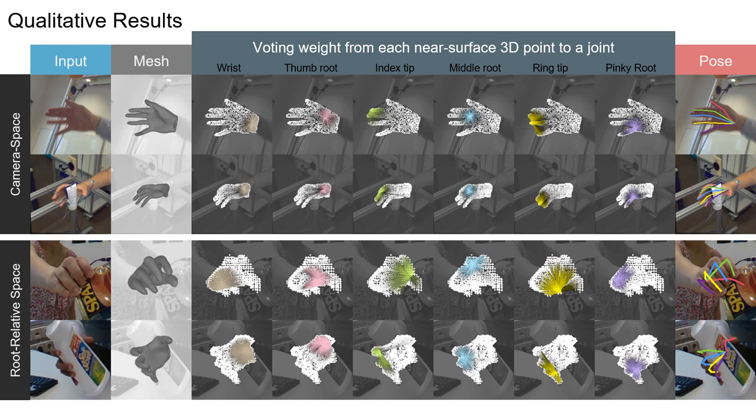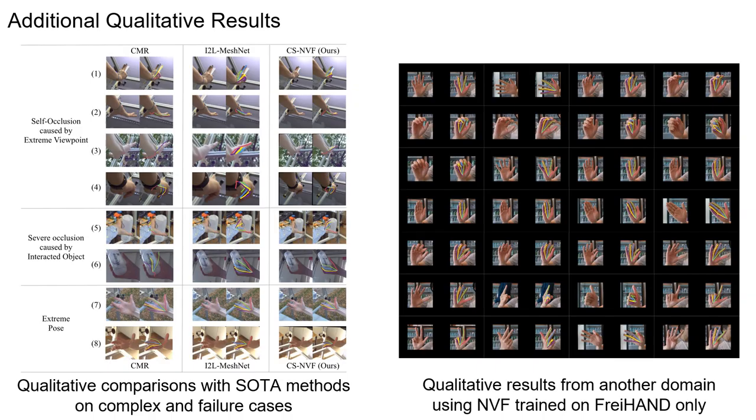We show qualitative results for both absolute and relative 3D hand pose estimation. Given the input image, we can generate a 3D hand mesh via marching cubes from the predicted signed distances. The white circles are 3D points predicted to be in the surface vicinity, and the colored lines denote the predicted 1D voting weight from each near-surface 3D point to a joint. The final column shows the estimated 3D pose. Generally, NVF can handle challenging cases of self-occlusion, occlusion by interacted objects, and complex poses, leading to robust 3D hand pose.